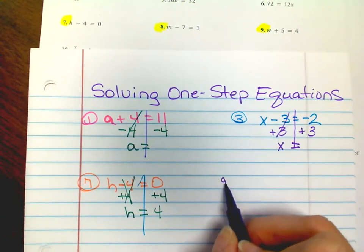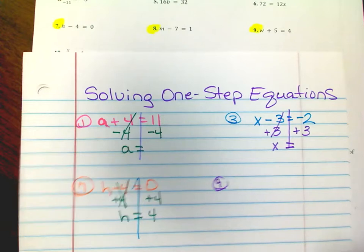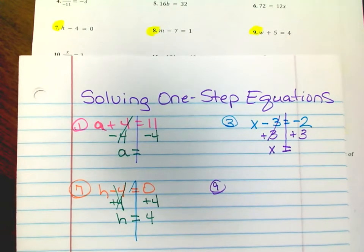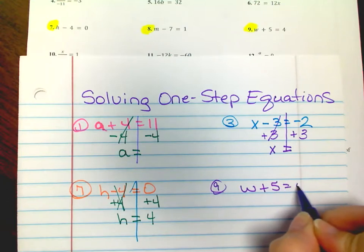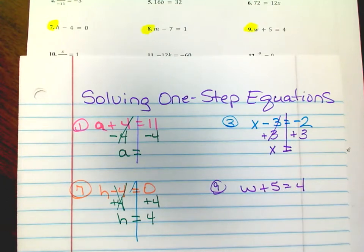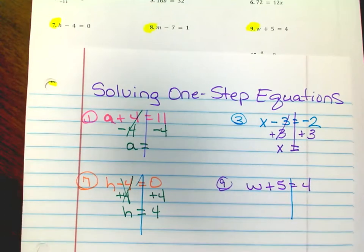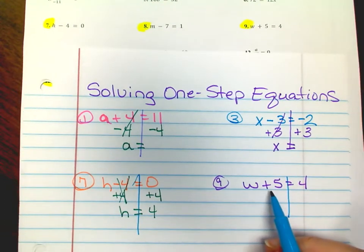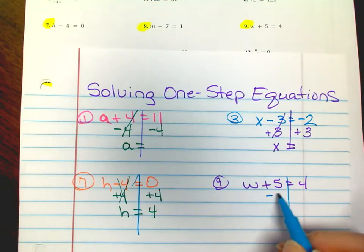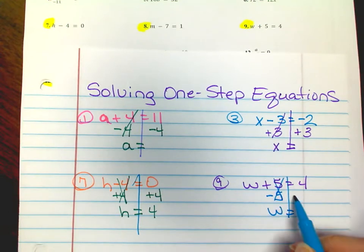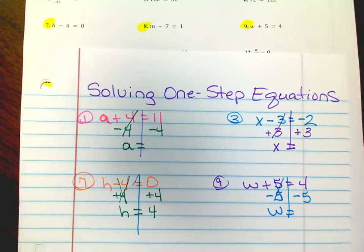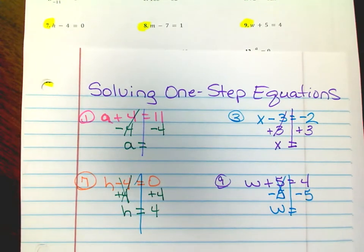Let's look at number 9. You need to pause the video and do number 8 yourself and show your work. For number 9, we have w plus 5 equals 4. I want w all by itself. If I have a positive 5, how can I make it 0? Negative 5. That crosses out and gives you w. So whatever you do to this side, you must do to this side — subtract 5 from 4 — and you'll have what w is.